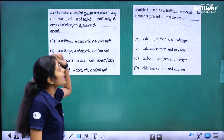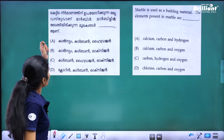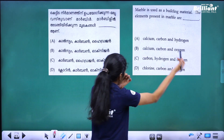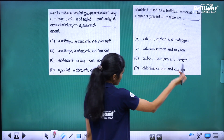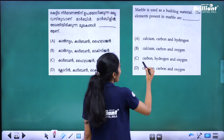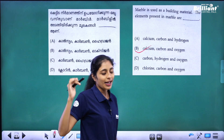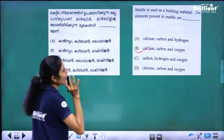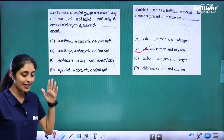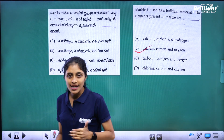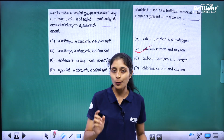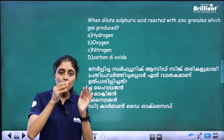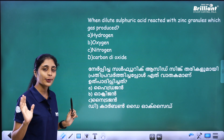Next question: marble is used as a building material. What are the elements present in marble? Marble is CaCO₃ — calcium carbonate — so the elements present are calcium, carbon, and oxygen.